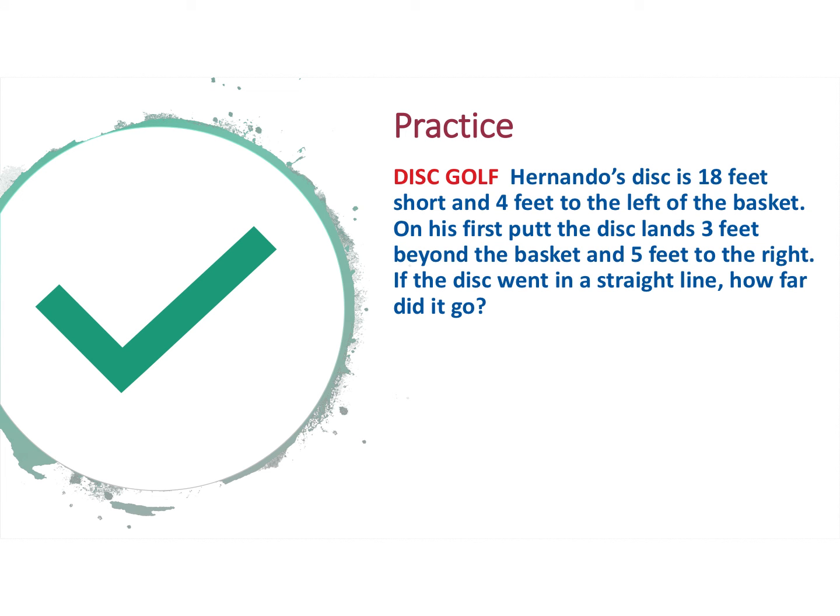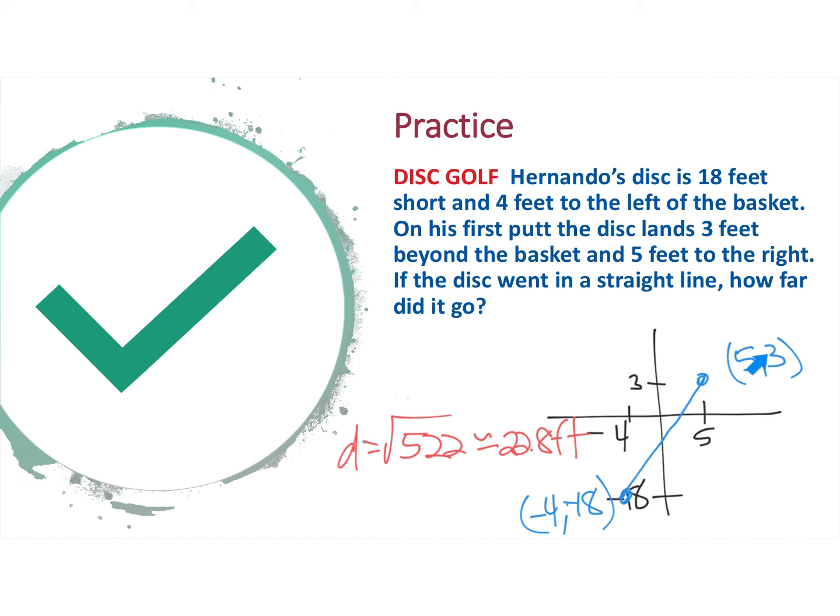Go ahead and try to practice this one. Same kind of setup. Try to draw it first. Pause it. I will have an answer shortly. If you tried it here, you should get that we have a point up here at 5 comma 3, which is 5 to the right and 3 feet beyond, going upwards. Then we have this point down here at negative 1, negative 8, which is short of this putt and to the left of it. Then we find this distance using X1, Y1, X2, Y2, and we should get about 22.8 feet.